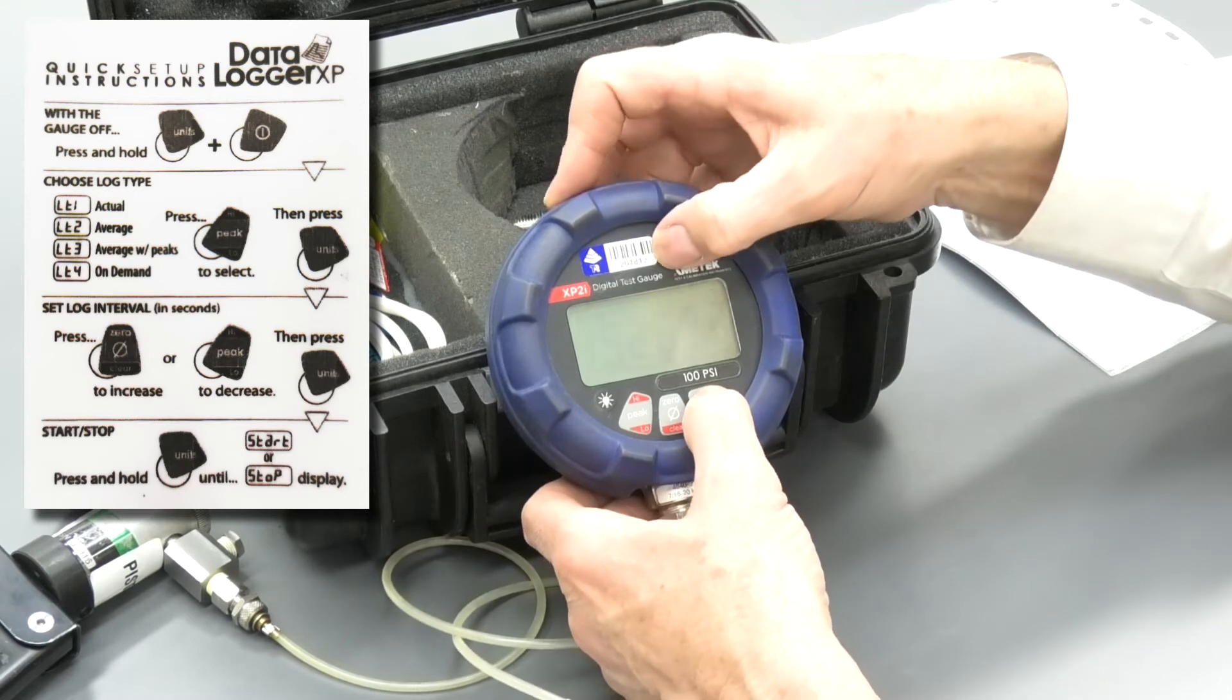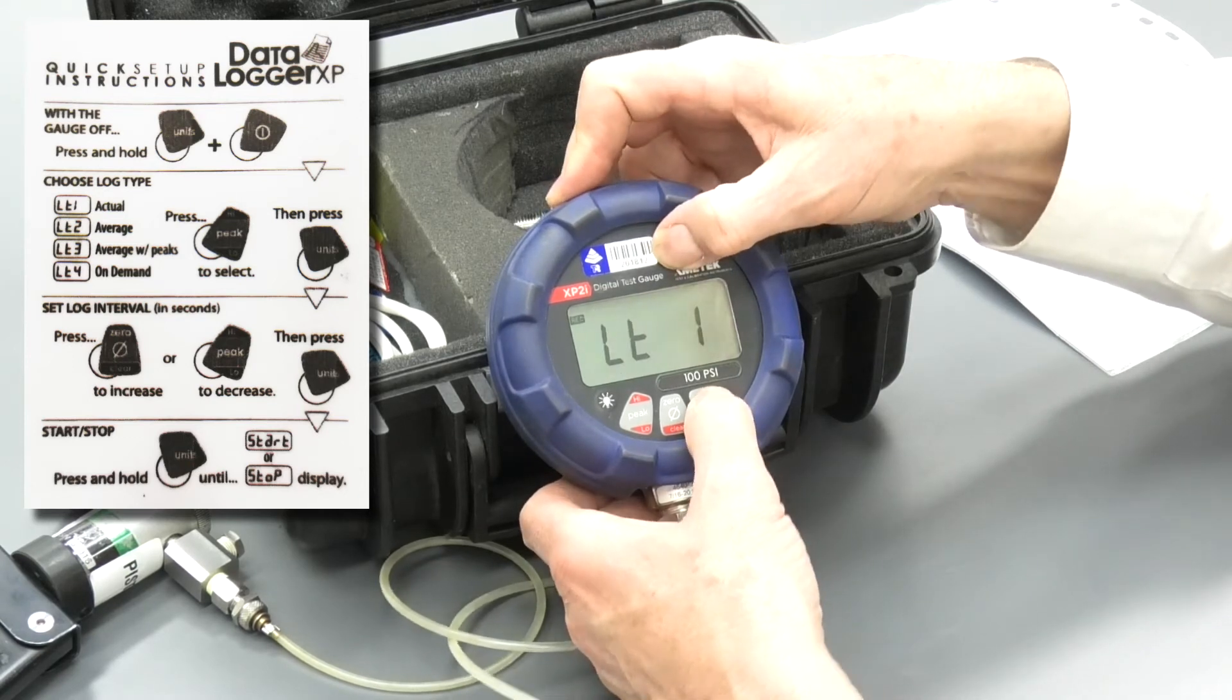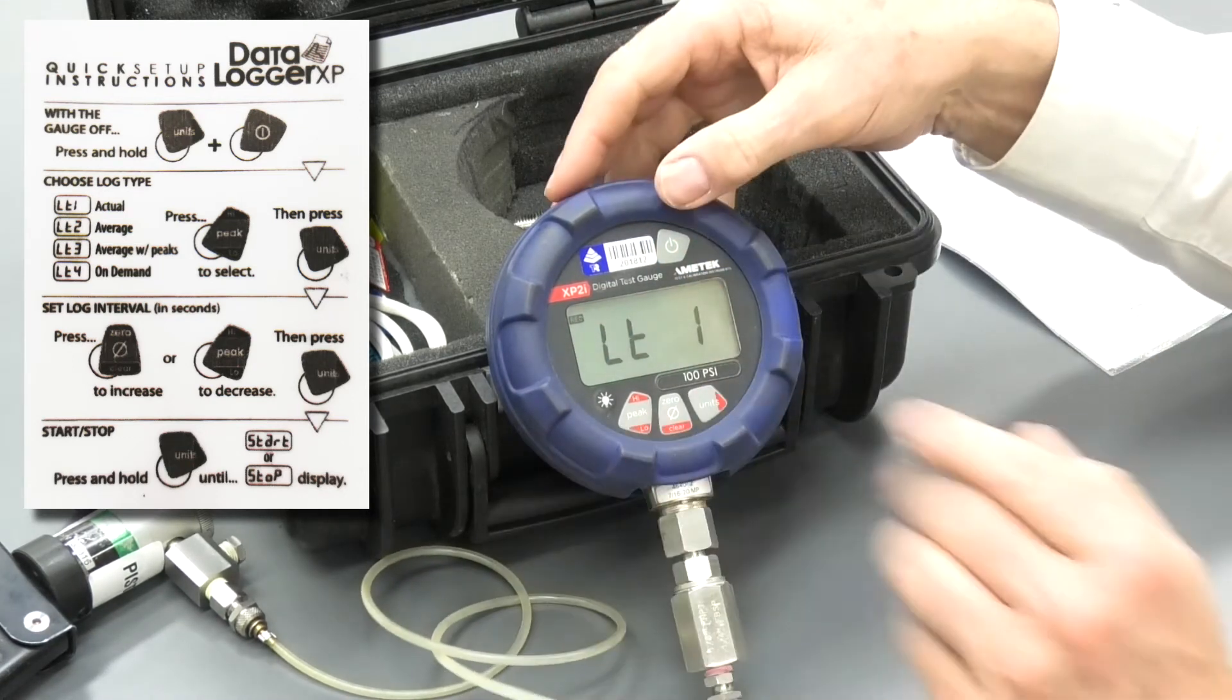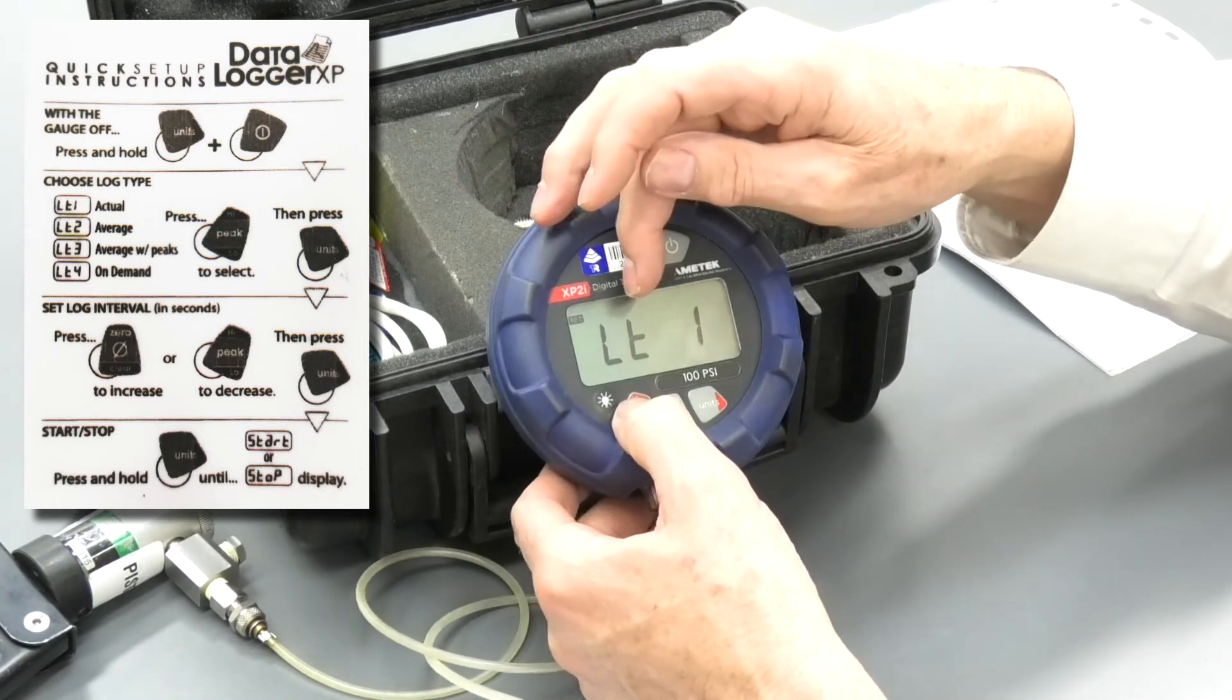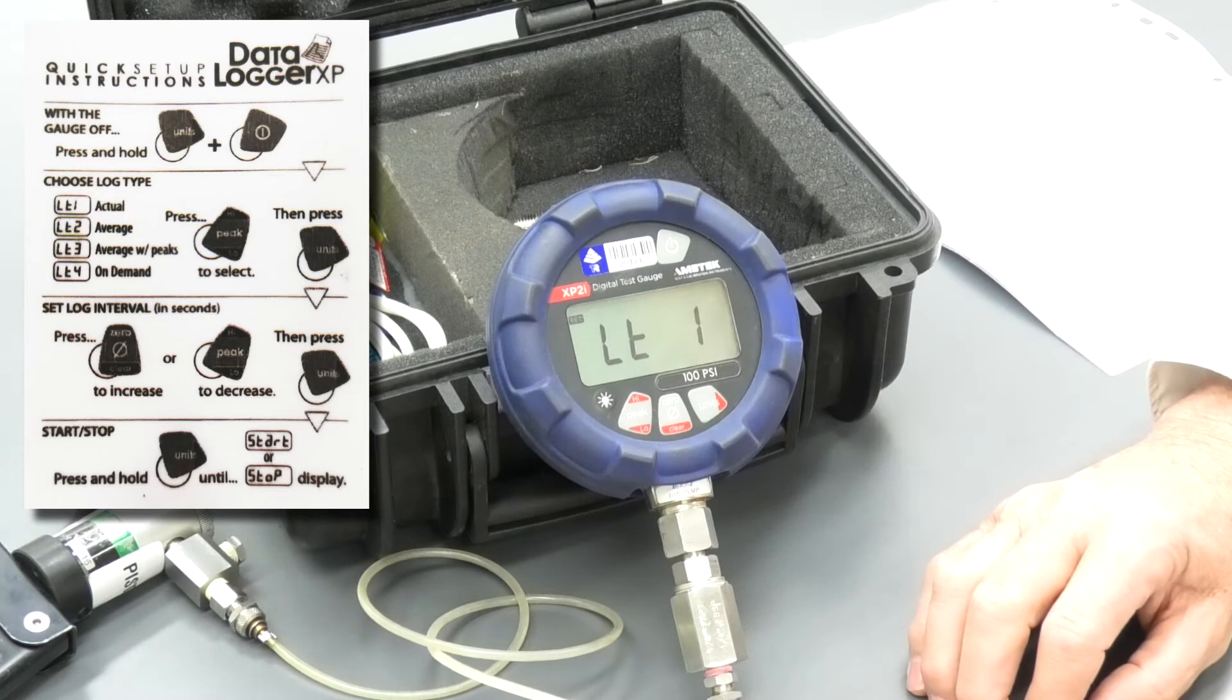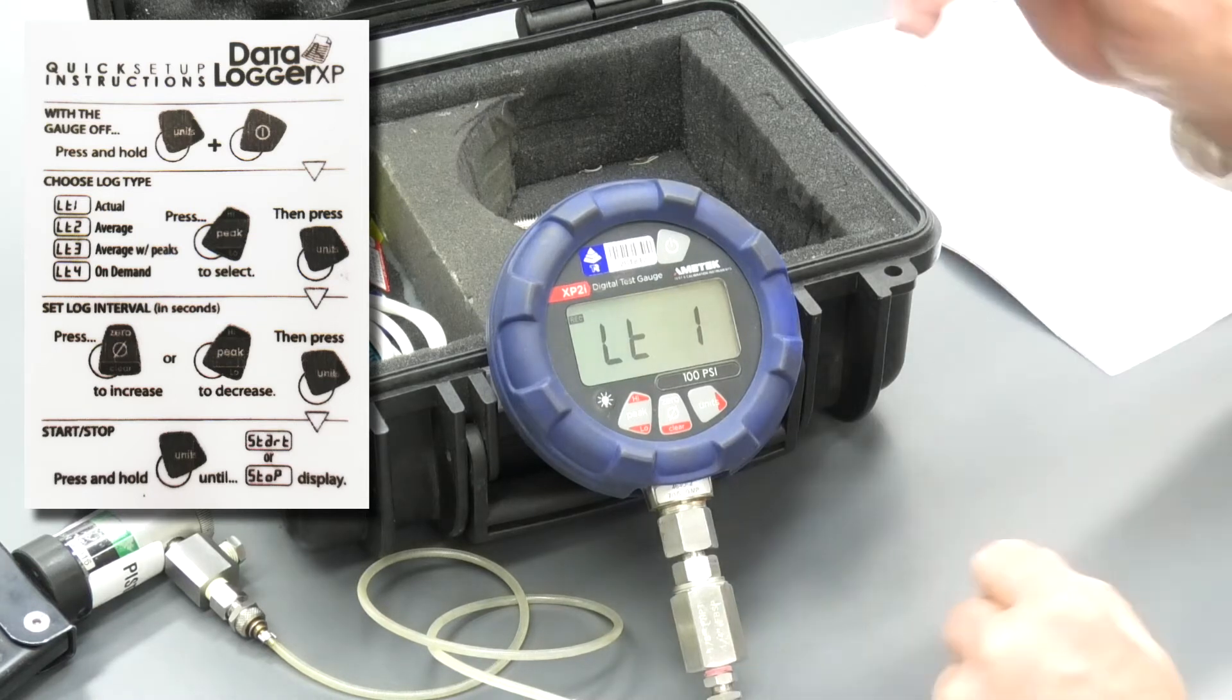So if I hold the units key down and switch it on, it comes up, it's in record mode. Now I can hit the peak key. Now there's a couple of recording modes. Record mode one, LT1 is actual. We can record average, average with peaks or on demand. So I'm just going to record actuals.